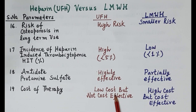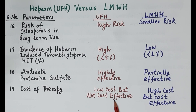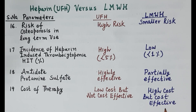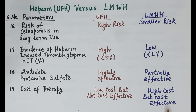Regarding cost of therapy: the cost of unfractionated heparin itself is lower, but it is not overall cost-effective due to the requirement for aPTT monitoring, higher risk of bleeding, higher incidence of HIT, variable anticoagulant responses, and longer hospital stays. Low molecular weight heparin has a higher drug cost but is overall cost-effective because of improved clinical response, shorter hospital stays, and no requirement for aPTT monitoring.